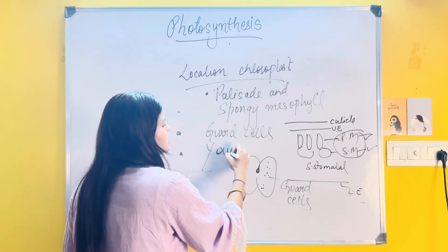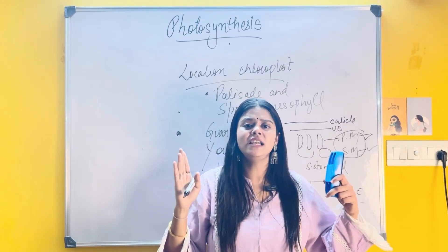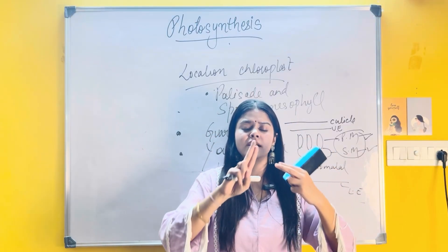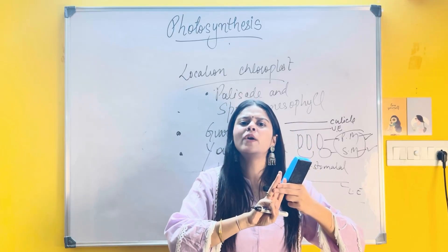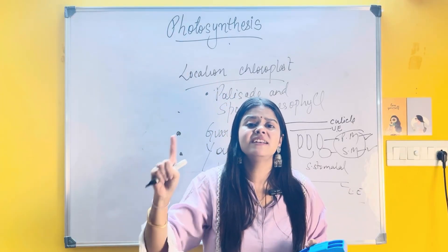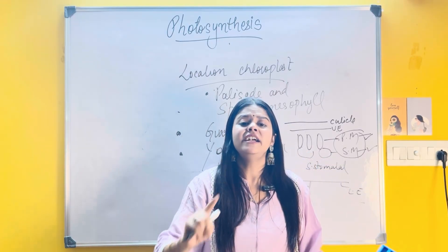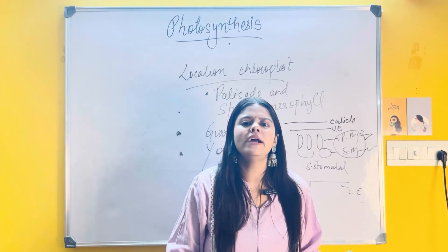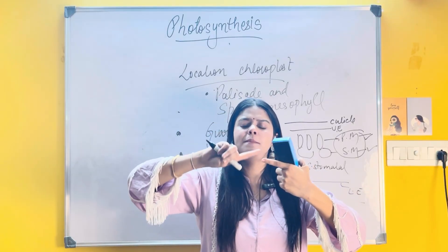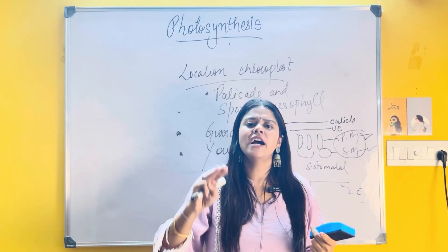The third location of chloroplast is in young green stems. To summarize the location of chloroplast: first, in the leaves — specifically in the palisade mesophyll and spongy mesophyll cells; second, in the guard cells; third, in the young green stems. If the question asks for the location of chlorophyll, it is present in the chloroplast — specifically in the walls of the thylakoid. Do not just write thylakoid, or you will lose marks; write walls of the thylakoid.